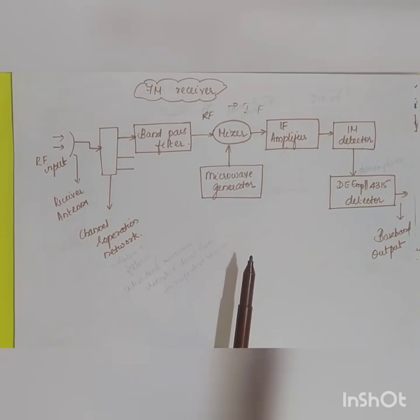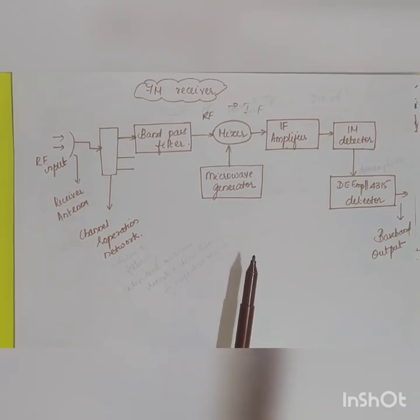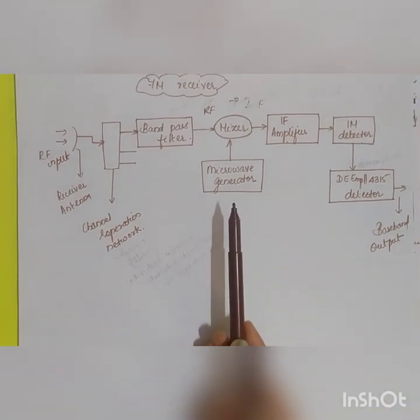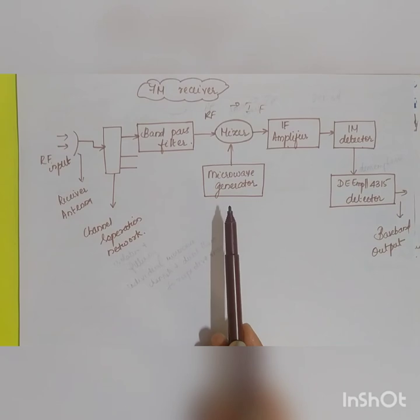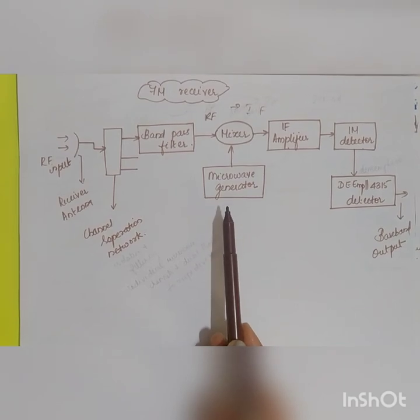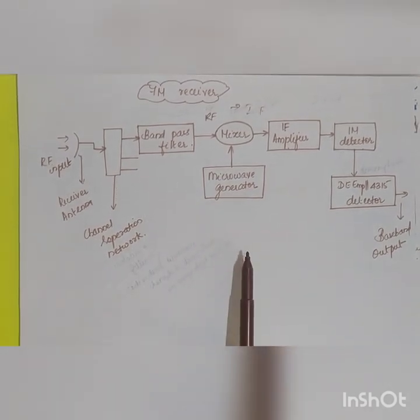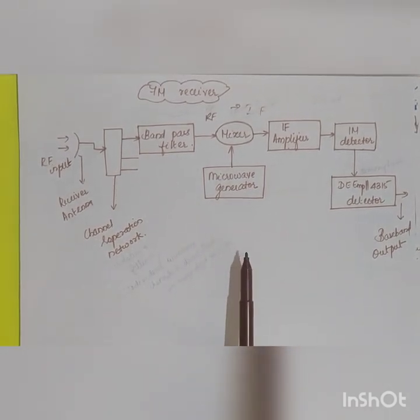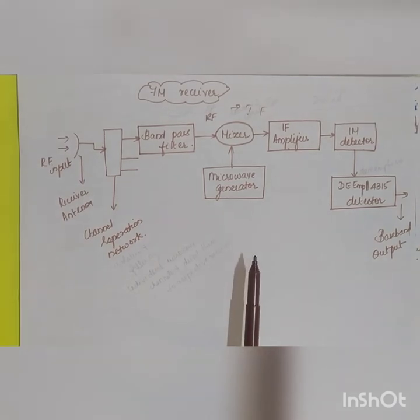These are the various blocks of the FM transmitter and receiver sections. With this, module 5 is completed. Notes are available on the Telegram channel.